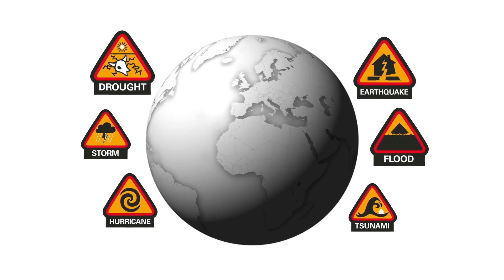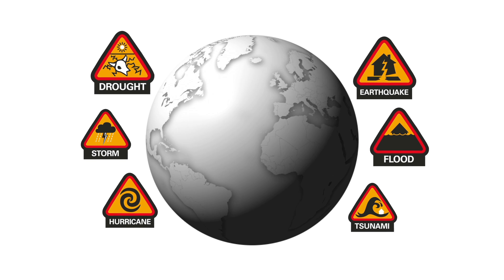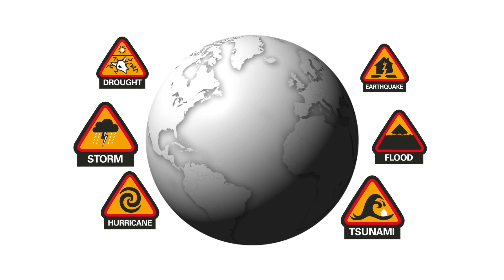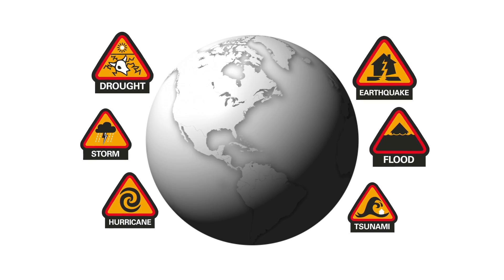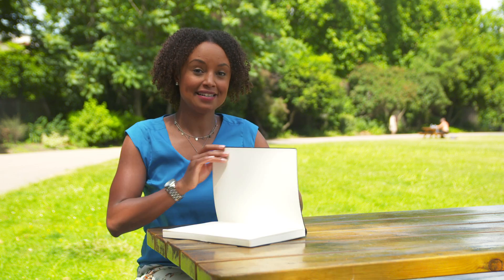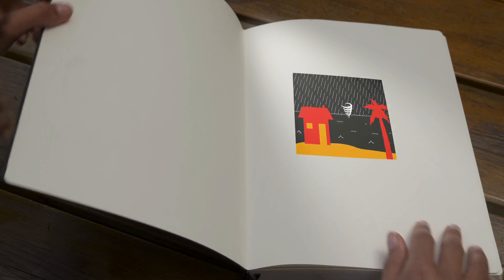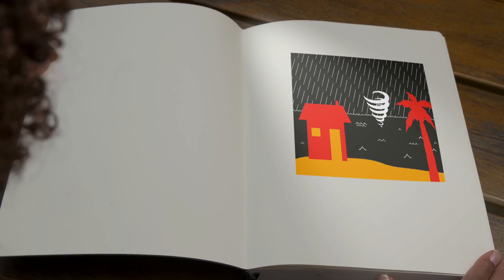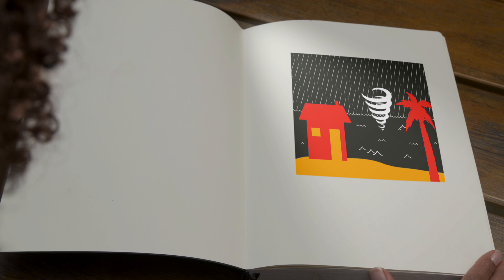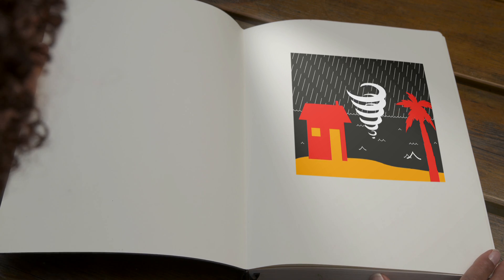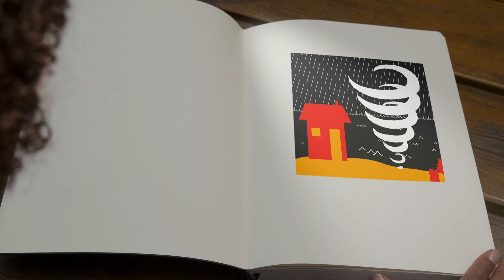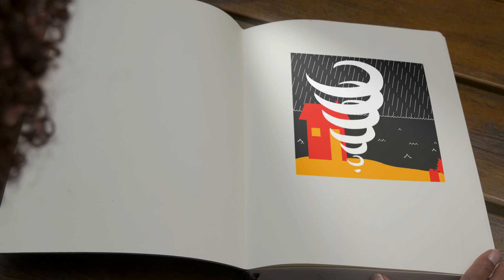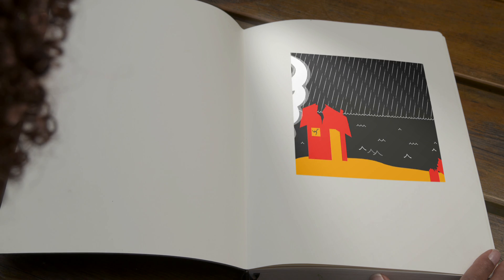We're going to look at some different types of disaster and then see what can be done to help people cope. Hurricanes and typhoons are tropical storms that can cause damage with very strong winds and heavy rain. These types of storms build up over large areas of warm water, which is why they usually happen by the sea in tropical places.